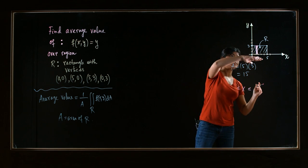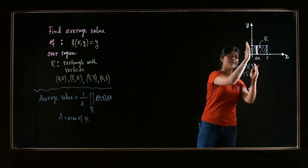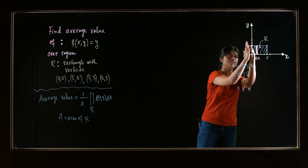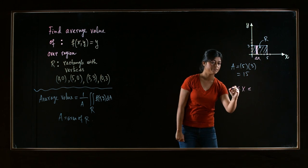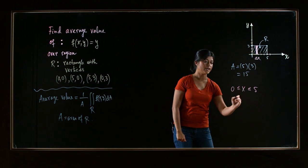And let's see. The x bounds are, x starts at 0, the region, and then goes up to 5. So x is between 0 and 5.